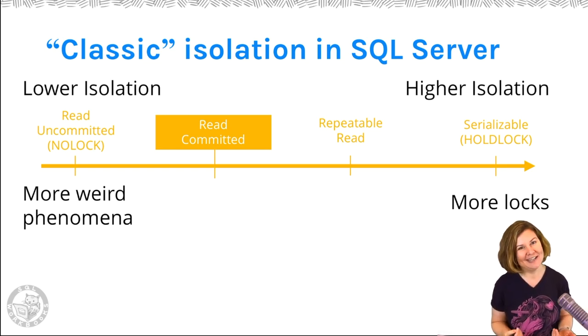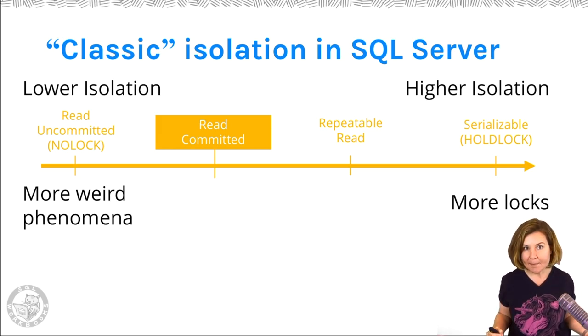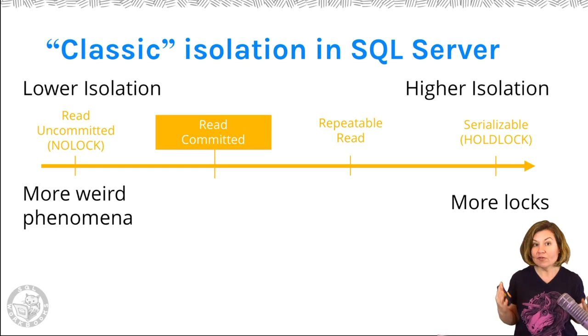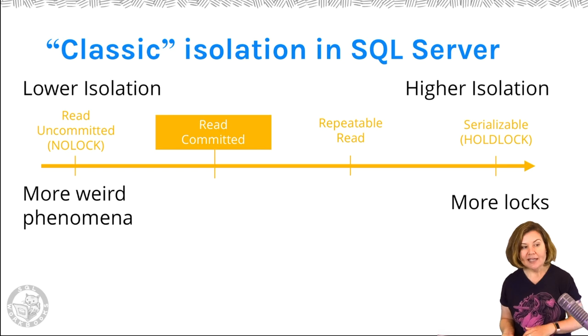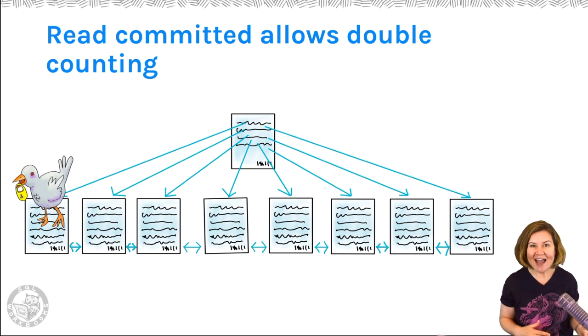As long as data is being modified, I'm really going to start returning results that are questionable because I will even read data that is in the process of being modified. I don't even know if that modification is going to commit. So that can get really tricky. So in read committed, we do have some weird phenomena, and weird phenomena means incorrect data going back to your users. It gets even worse if we go more to the side of read uncommitted.